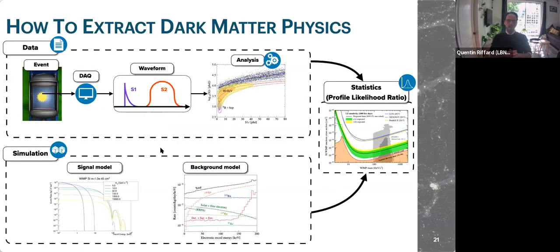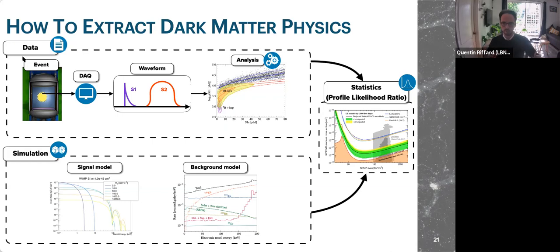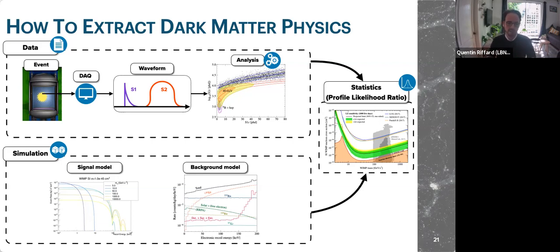How do we get there? We have two sources of information for the profile likelihood ratio technique: first, the data — events acquired with the DAQ that produce waveforms we analyze to get key plots. On the other hand, we need simulation to tell us what our different background events look like and what the signal model will be. Data and simulation are both very critical components for the performance of this experiment.